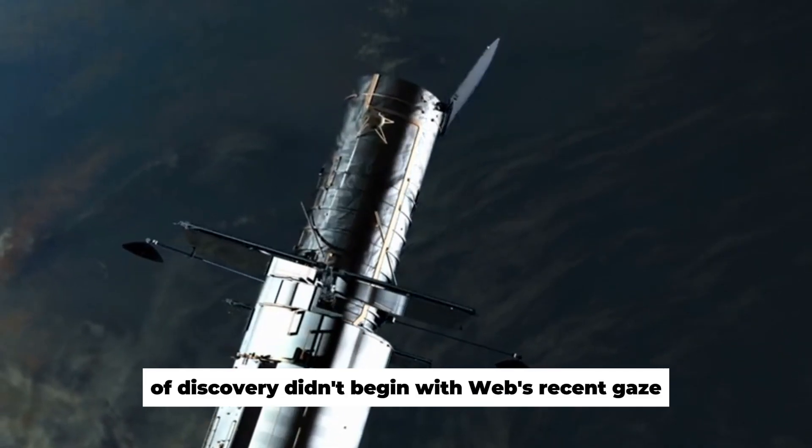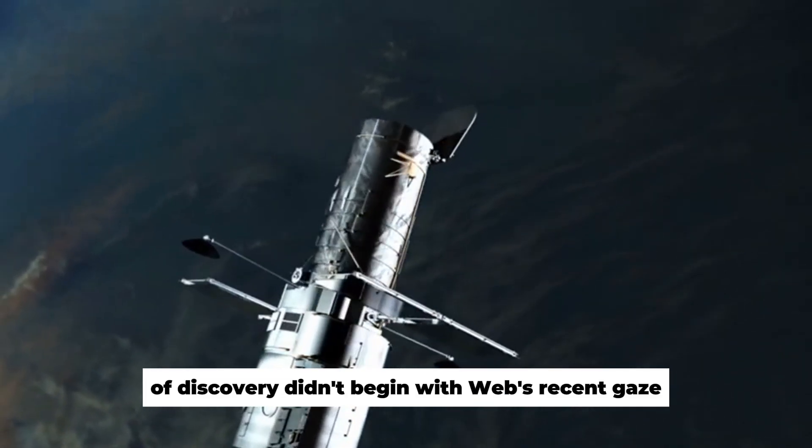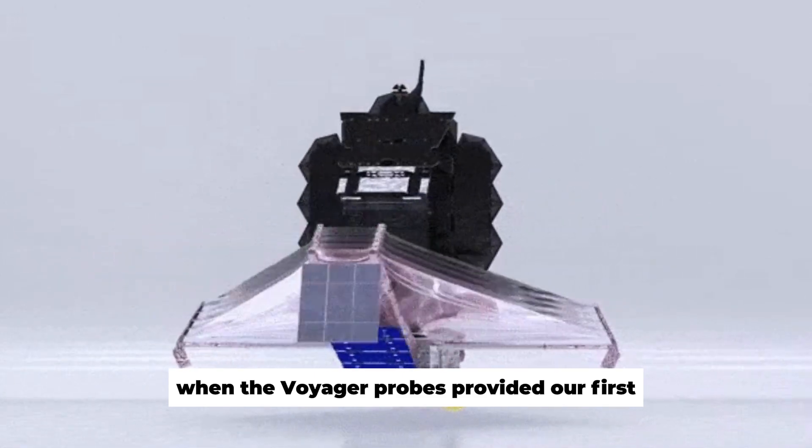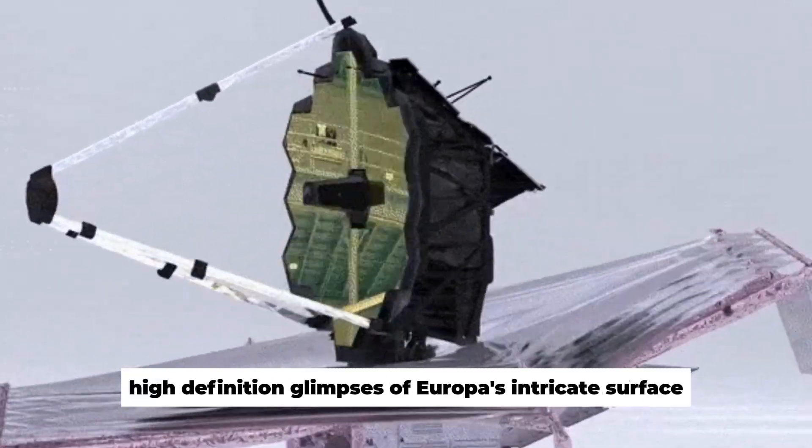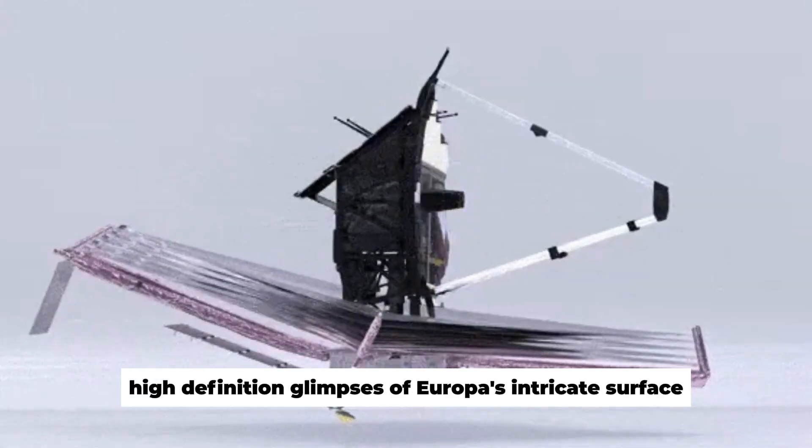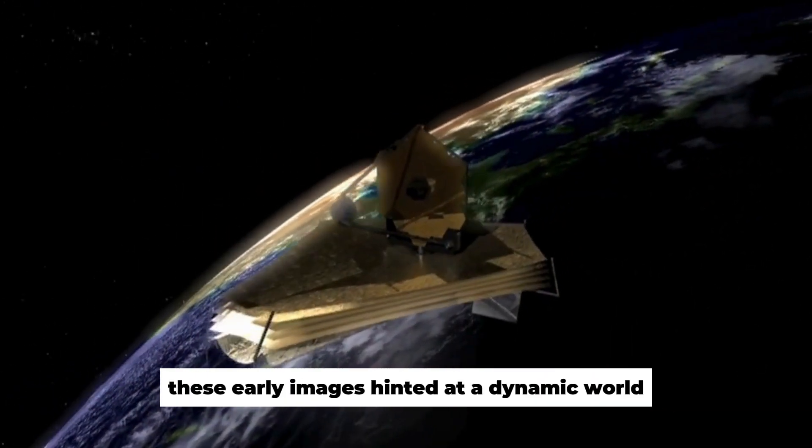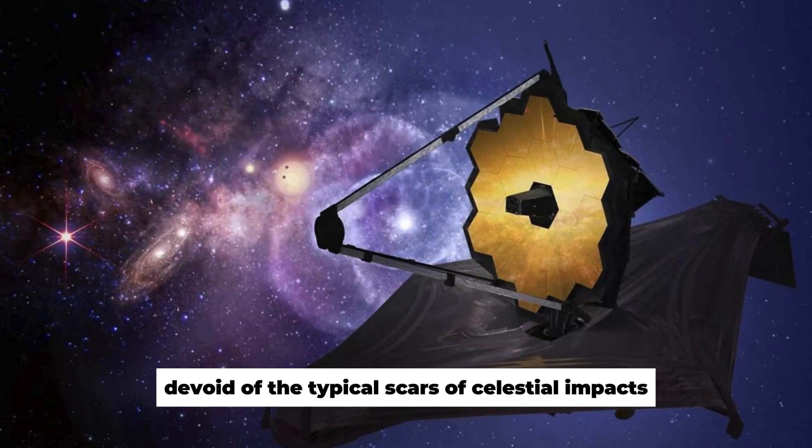The journey of discovery didn't begin with Webb's recent gaze. It stretches back to the 1970s, when the Voyager probes provided our first high-definition glimpses of Europa's intricate surface. These early images hinted at a dynamic world, devoid of the typical scars of celestial impacts.